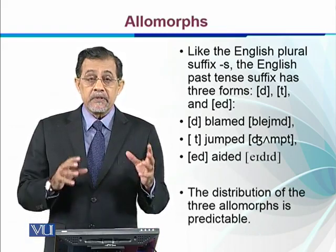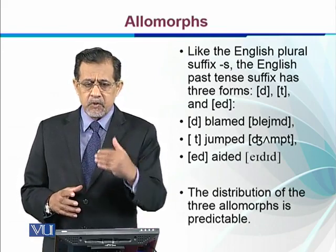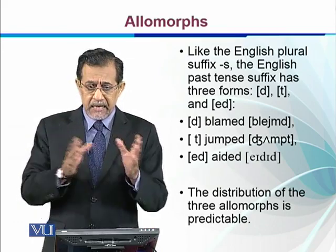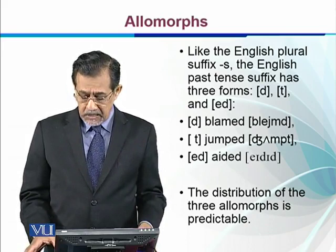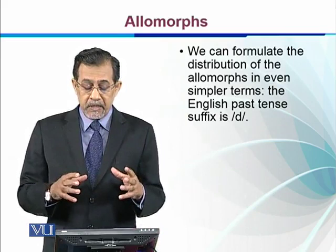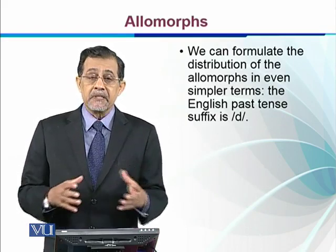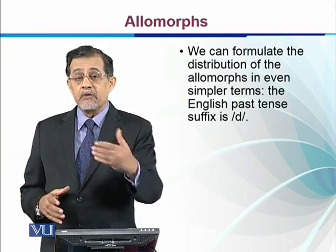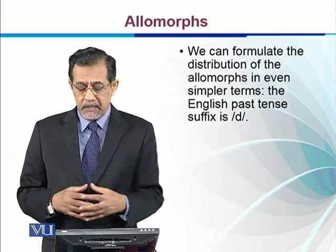This distribution of the three allomorphs is predictable. Once the rule is known, we can easily place a certain allomorph in a certain place. As discussed with other languages, we can formulate the distribution of allomorphs in even simpler form: the English past tense suffix is basically /d/, but in the presence of certain sounds it assimilates with them and becomes /t/ or /ɪd/.